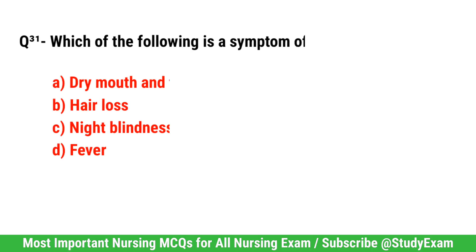Question number 31. Which of the following is a symptom of dehydration? Correct option is A. Dry mouth and thirst.